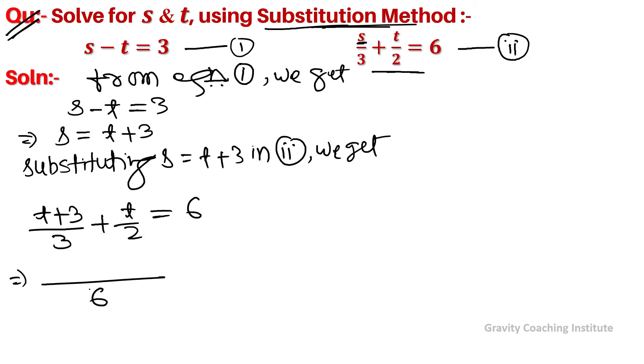The LCM is 6. We multiply (t + 3) by 2 and t by 3.